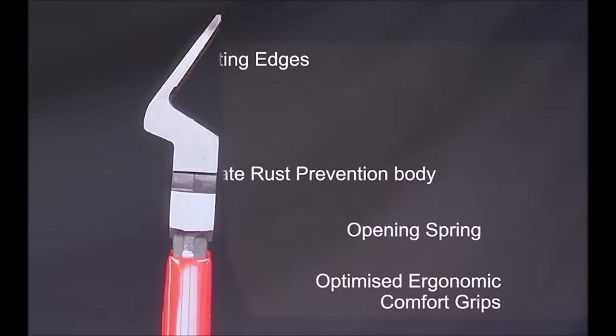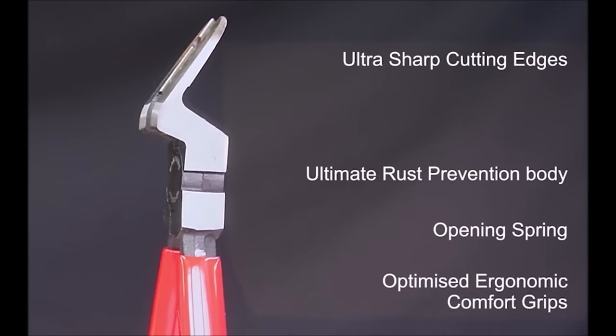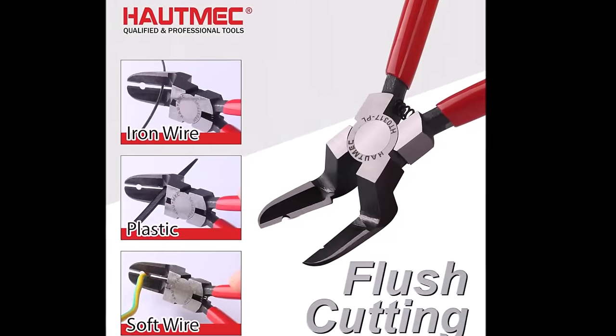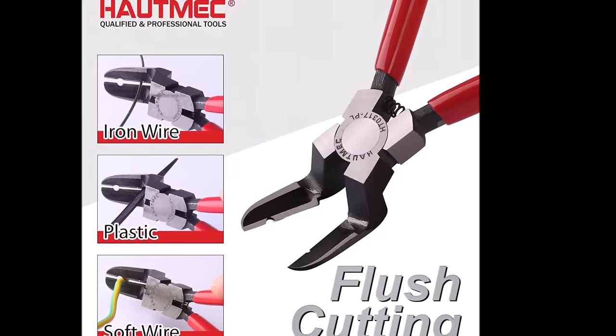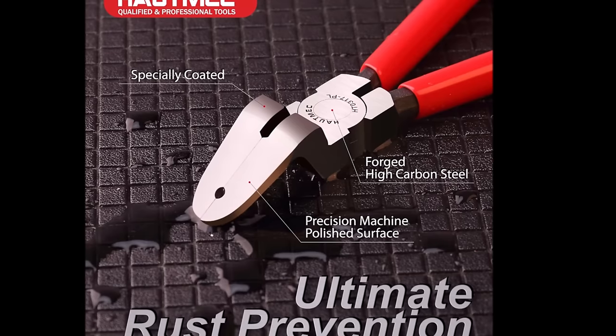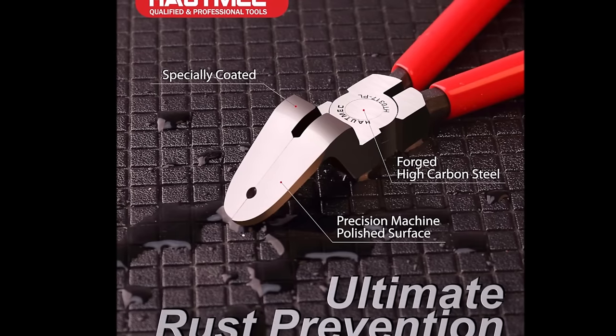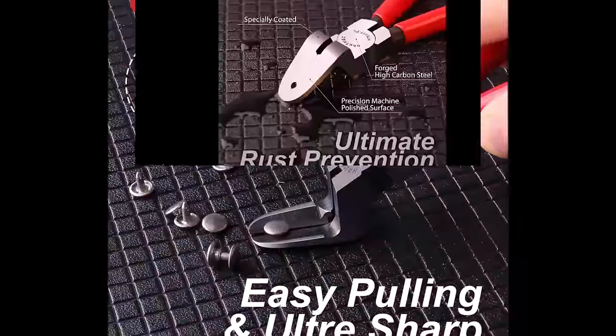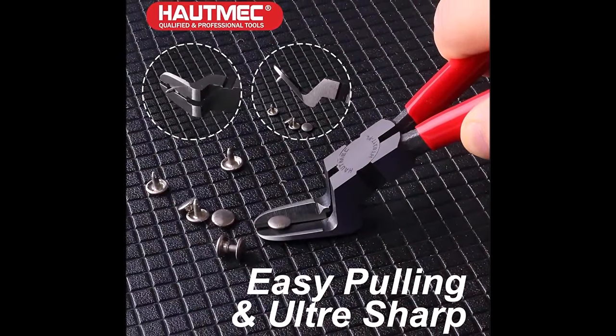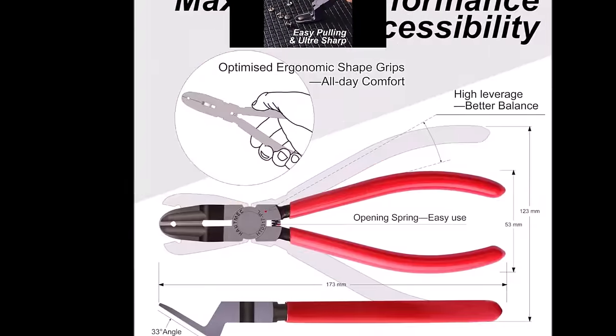With an opening spring and high leverage, the panel clip removal pliers offer easy use and maximum performance. They are perfect for prying and cutting fastener rivets, clips, plastic rivets from cars, zip ties, cable ties, hose ties, as well as soft metal wire and plastic. These pliers provide a slimmer, lighter, and better balanced design for improved accessibility and usability.